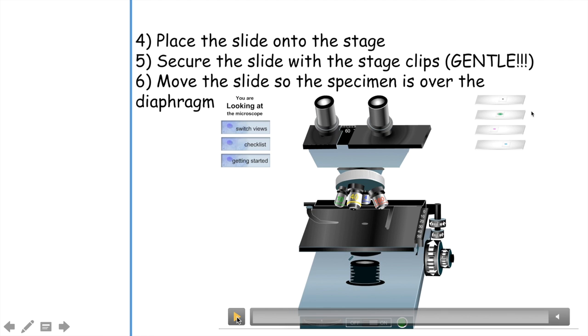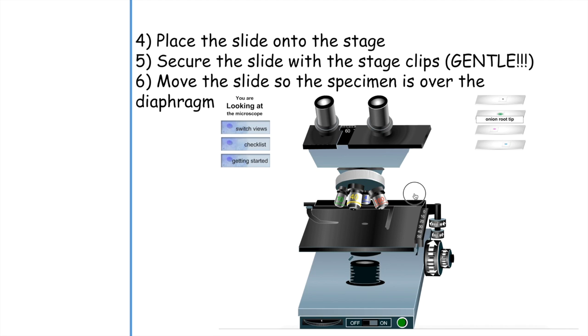The next step is to place the slide onto the stage. On my screen, I have four different slides that have already been prepared. We're going to go ahead and choose this one right here, which is the onion root tip.